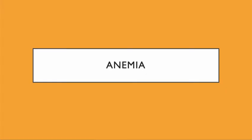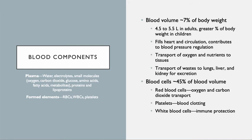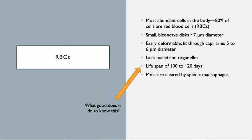Let's talk about anemia. Remember the blood components: plasma makes up a lot, formed elements make up less. In total, the weight of the blood volume is about 7% of the body weight. Blood cells form about 45% of that volume, and the blood cells consist mostly of red blood cells. Less than 1% are platelets and less than 1% are white blood cells. The RBCs are the most abundant cells in the body — 80% of the cells are red blood cells. They are small biconcave discs.